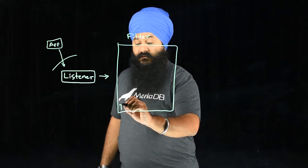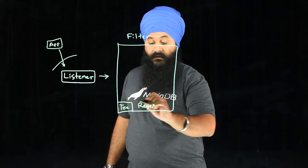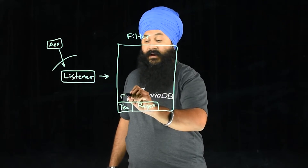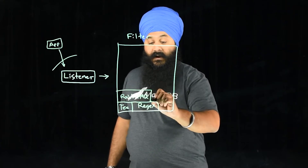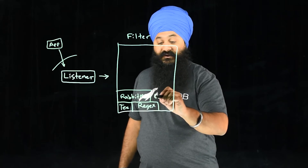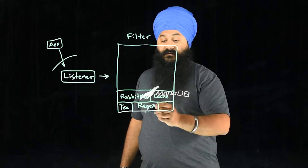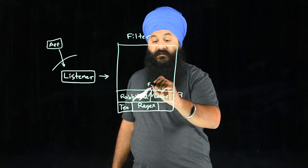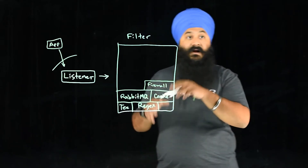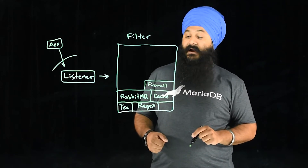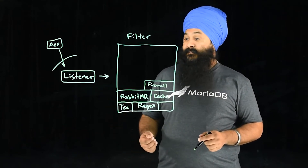You get great options — you could use, for example, the Tee filter, a regex filter, a filter that changes it to the RabbitMQ format for offloading to a messaging queue, a caching filter if you want some queries cached, or a firewall filter. There are so many great options and they just fit together like lego blocks. Some of these are just three or four lines of configuration in the MaxScale .conf and all of a sudden it's available for your service.